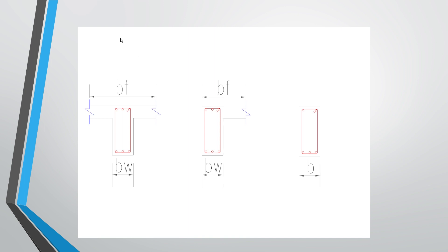BF (flange width) can be defined for a beam as the total width including the flange, as shown for T-beams and L-beams in the diagram. For a rectangular beam there is no flange. So when you find the ratio BF/BW and you have a value greater than 3, F1 = 0.8. When you have a value less than or equal to 3, F1 = 1.